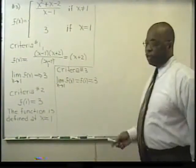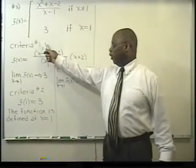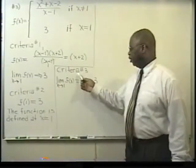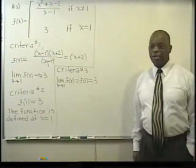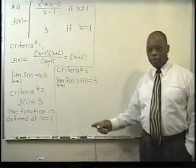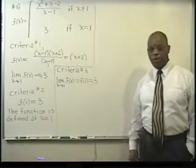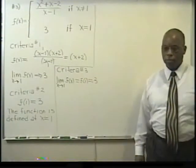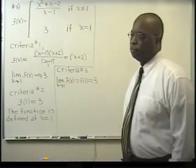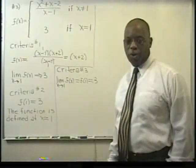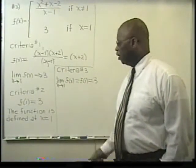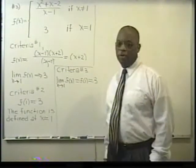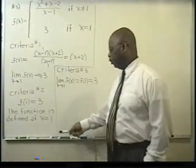So, this function has met criteria number one, criteria number two, and criteria number three of the definition of continuity. So, since it met all three criteria, what conclusion can we draw? Ralph? Yes. Do you agree with Ralph, what he said? That by the definition of continuity, f of x is continuous at x equals one, because all three criteria are met.